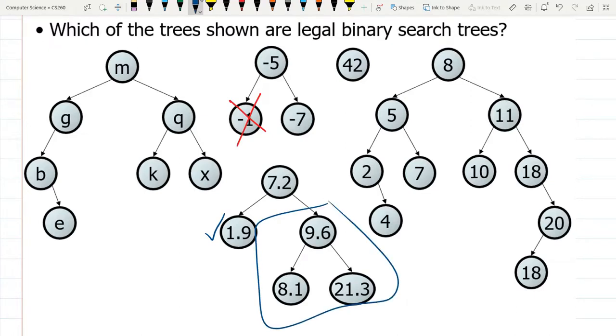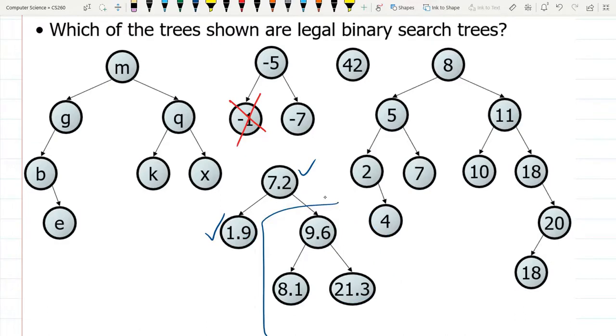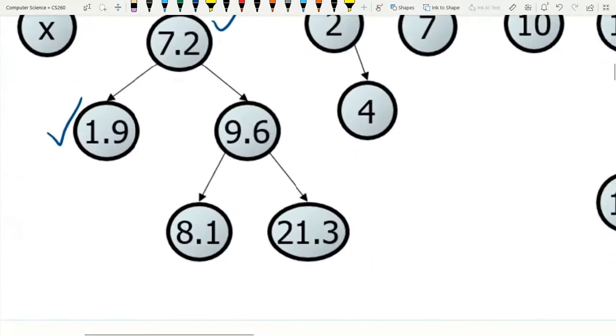But we're not done yet. All we've done is check that 7.2 is valid. But what we haven't done is made sure that this right here that I circled is also a binary search tree. So let's examine that a little bit more closely.